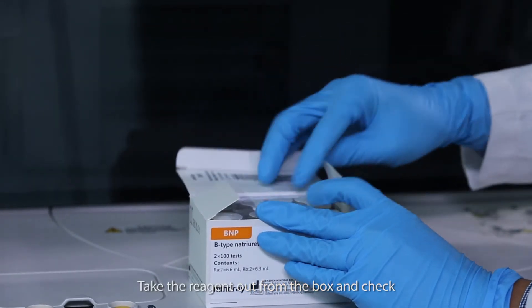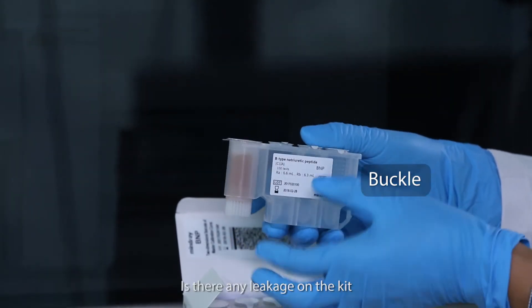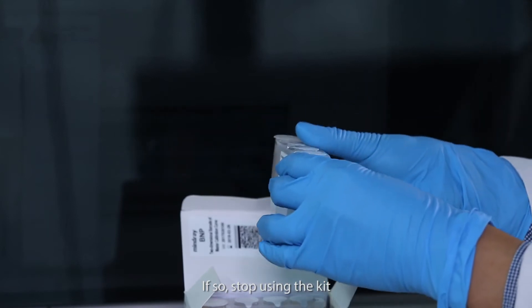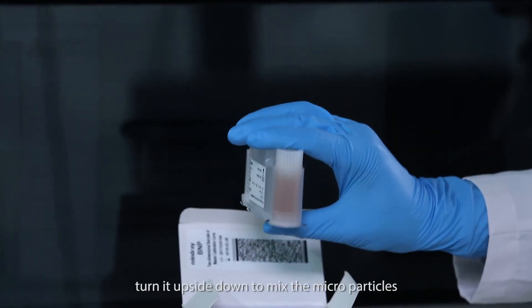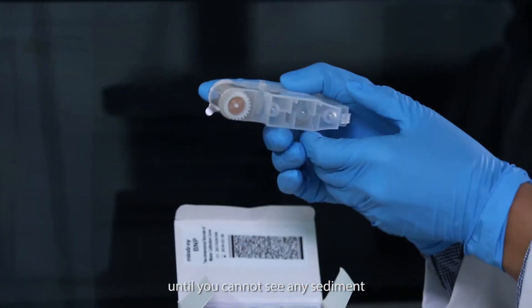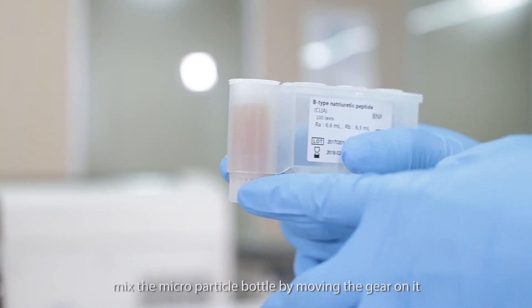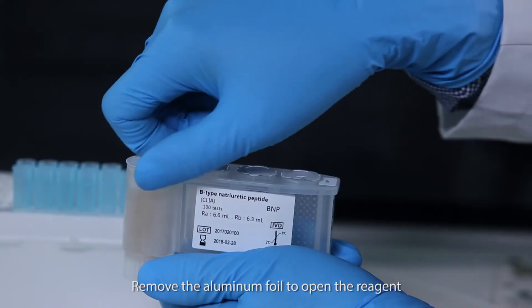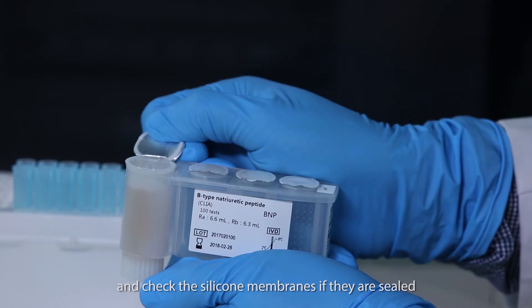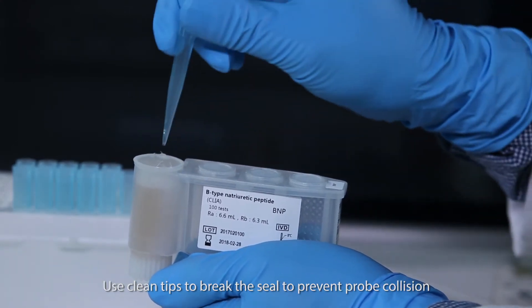Take the reagent out from the box and check. For example, is the kit buckle broken? Is there any leakage on the kit? If so, stop using the kit. If the kit is not open yet, turn it upside down to mix the microparticles until you cannot see any sediment. If the kit is already open, mix the microparticle bottle by removing the gear on it. Remove the aluminum foil to open the reagent and check the silicone membranes if they are sealed. Use clean tips to break the seal to prevent probe collision.